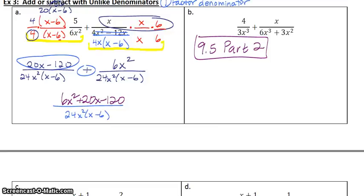Welcome to 9.5 part 2. I now have Windows Journal working again as far as I can tell. For this first example A, we ended up with 6x squared plus 20x minus 120.